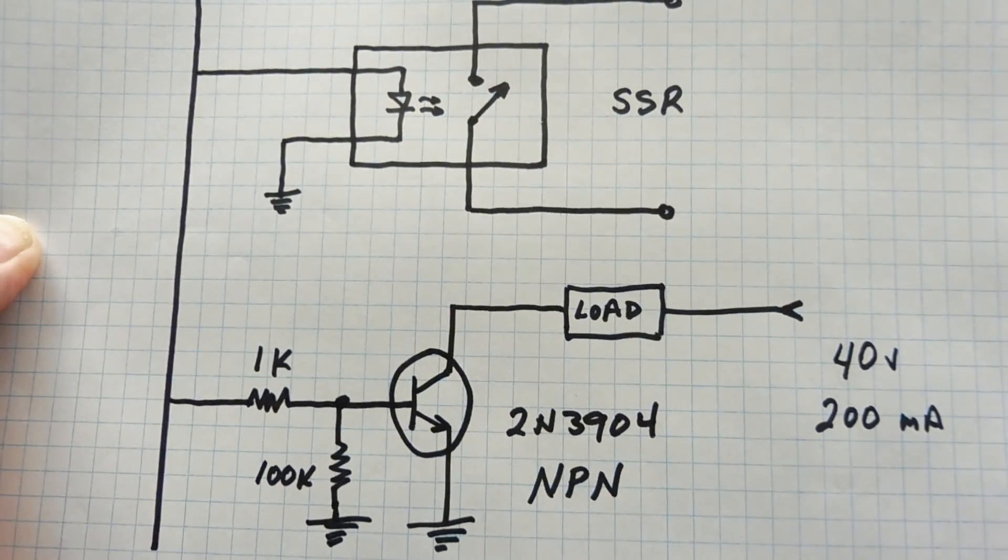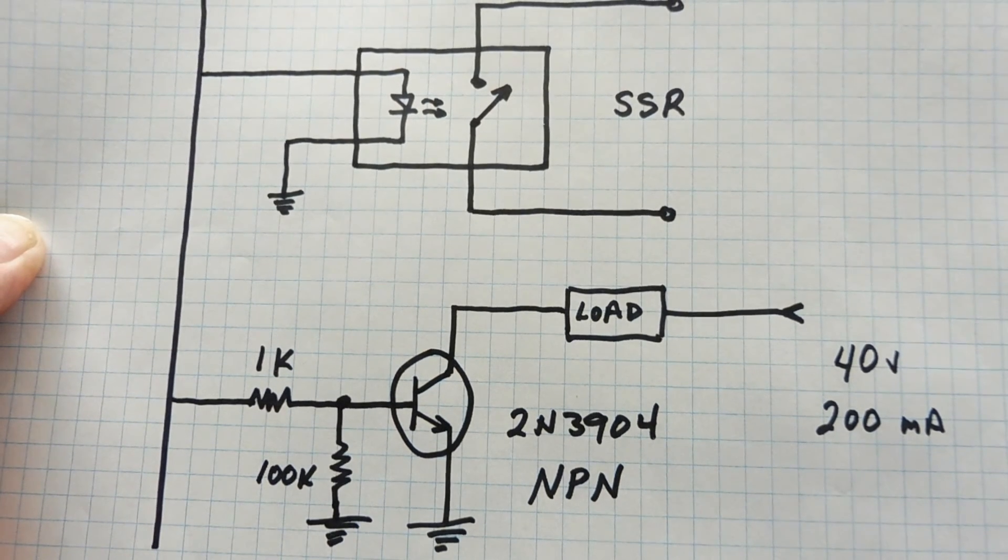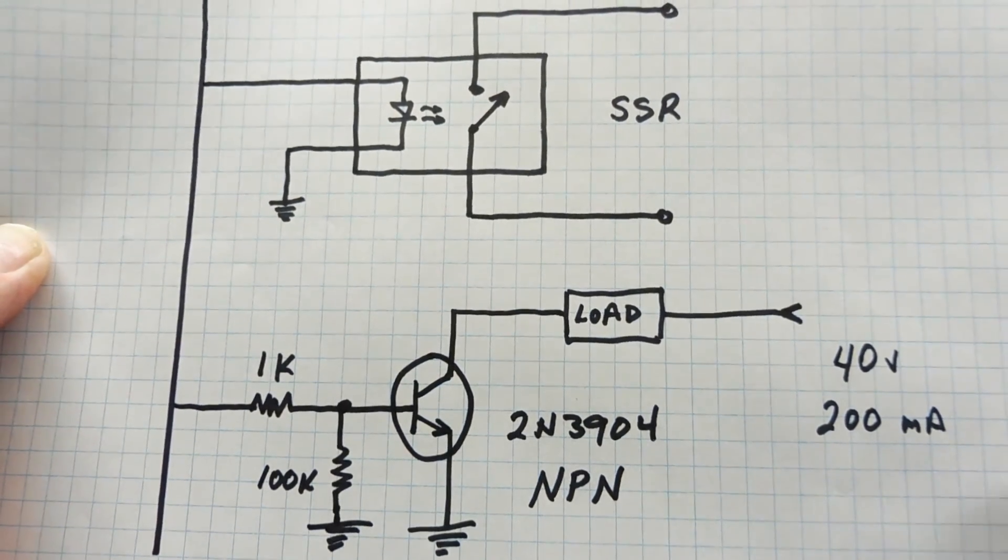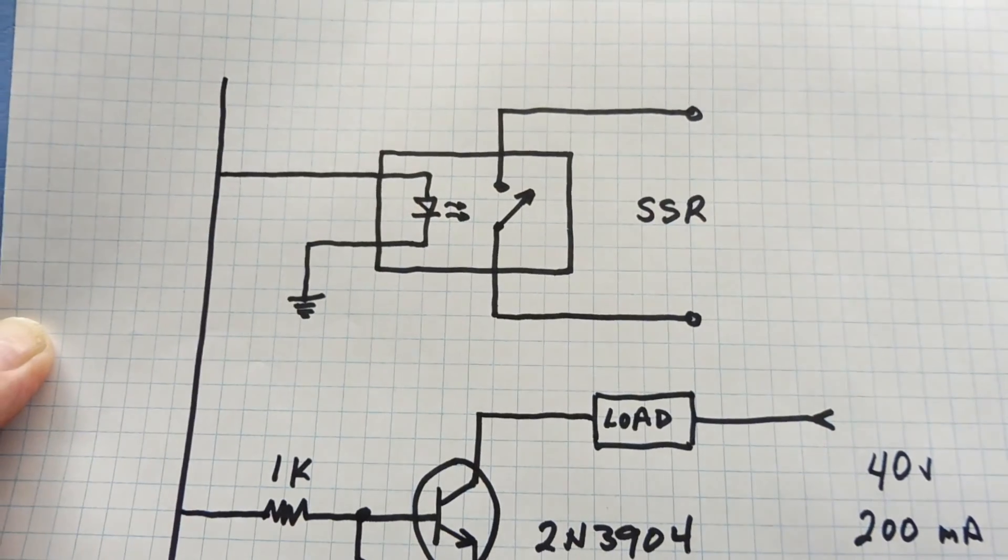This is our final output interface, and I've ended it with a simple NPN 2N3904 transistor interface, which can switch 40 volts at 200 milliamps. Also there's solid-state relays, and you get them in two versions. You can get an AC version or a DC version.